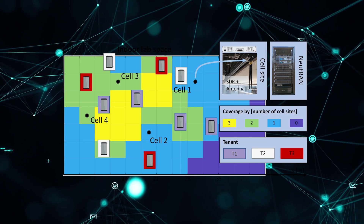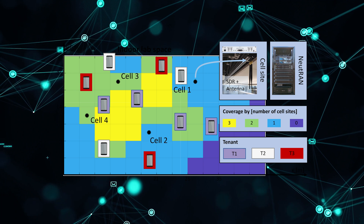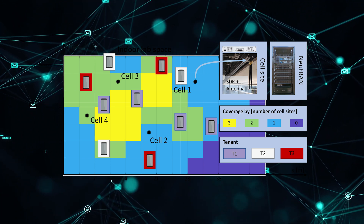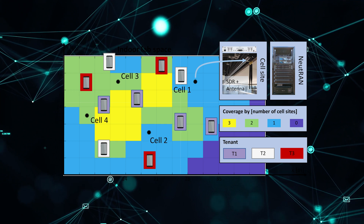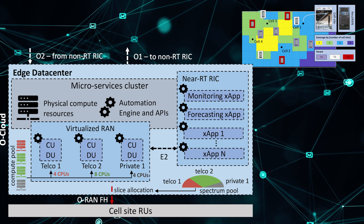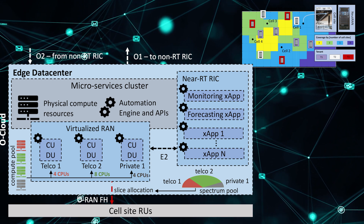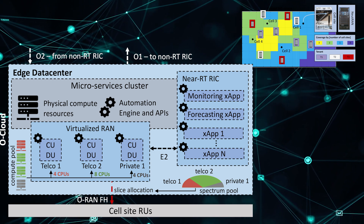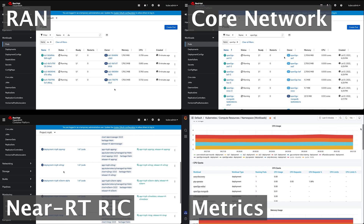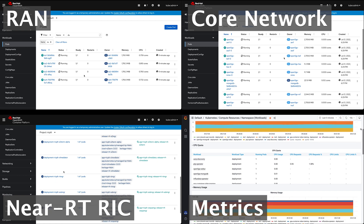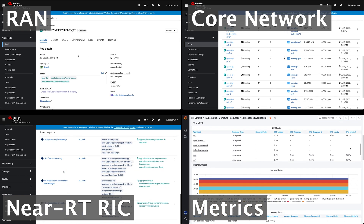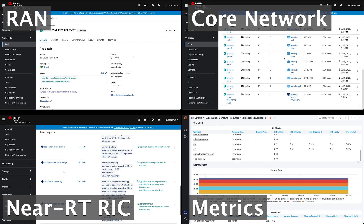Three tenants serve a total of nine UEs distributed across the deployment area. Each tenant submits a request to obtain a virtual network to cover the different areas where its users are deployed. The Z-Touch framework computes the optimal network configuration, specifying which RUs have to be assigned to each tenant and which frequencies must be used for their transmission. Then it activates and configures the RUs, instantiates all software-based RAN components such as CUs and DUs, the RICs, and initializes the E2 and O1 interfaces.